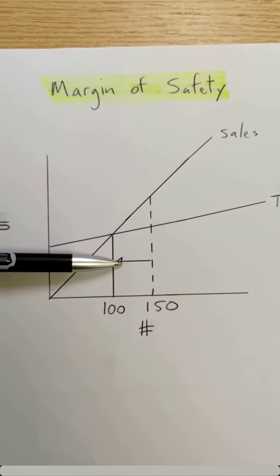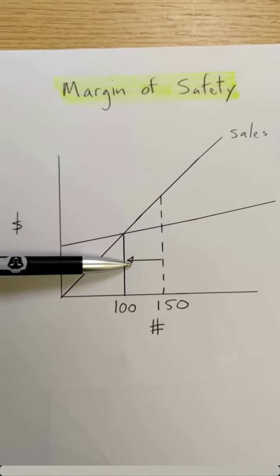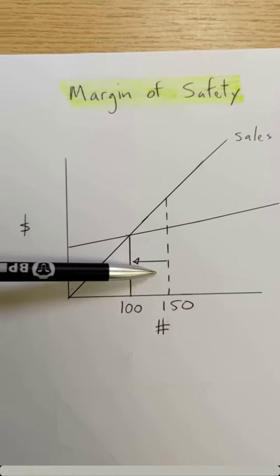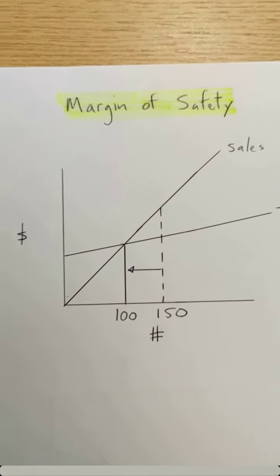activity level to break-even point. So the margin of safety is 50 units or 33%. My sales can drop 33% before I hit break-even point and go into losses.